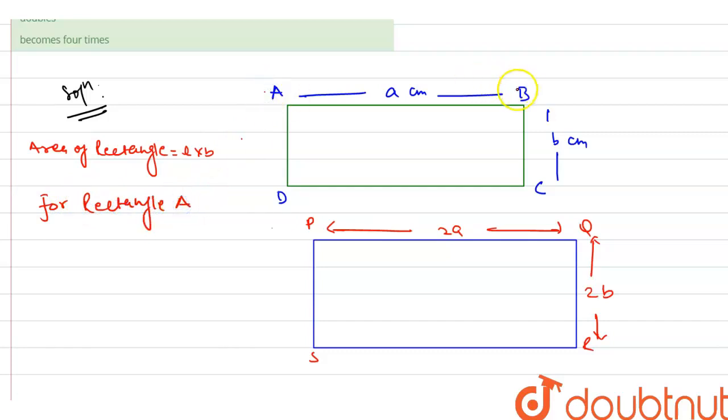Length is A into B. So we can write it A into B, means ABCD area will be length is A, breadth is B. So we can write it A into B, which is AB centimeter square.